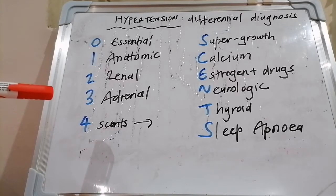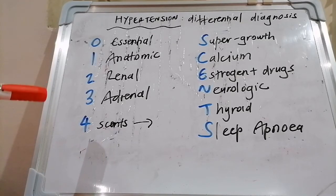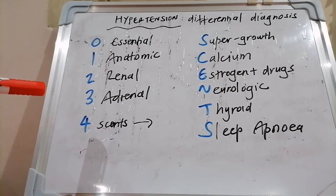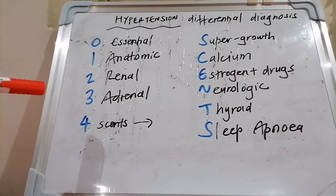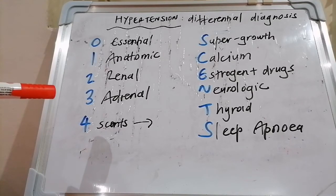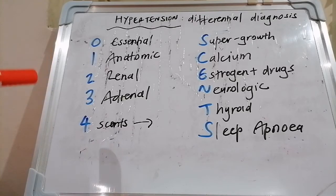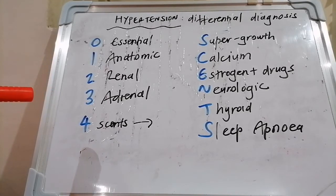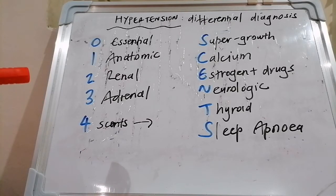Another cause is Gitelman syndrome, where there's a problem with the sodium-chloride co-transporter in the distal tubule, which is analogous to using thiazide diuretics. Licorice can also cause hypertension with hypokalemia by inhibiting the enzyme 11-beta hydroxysteroid dehydrogenase 2, which sits on the epithelial sodium channel in the distal tubule.